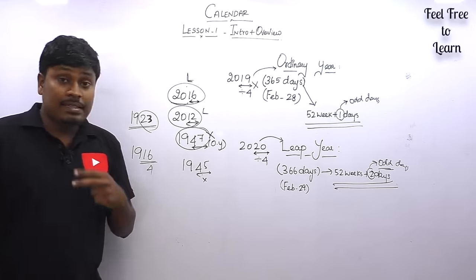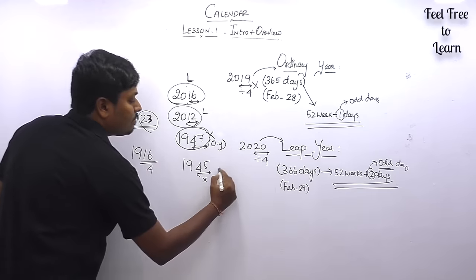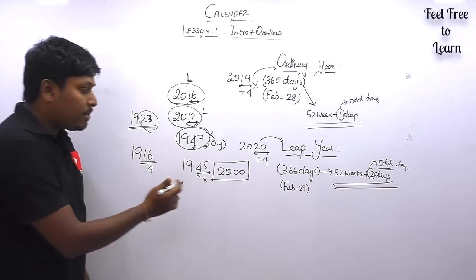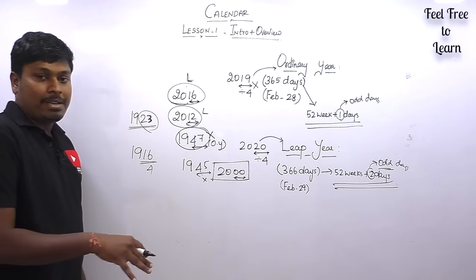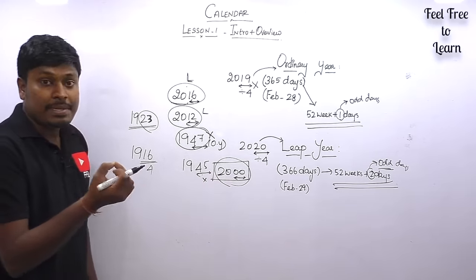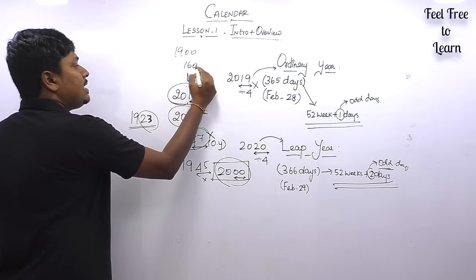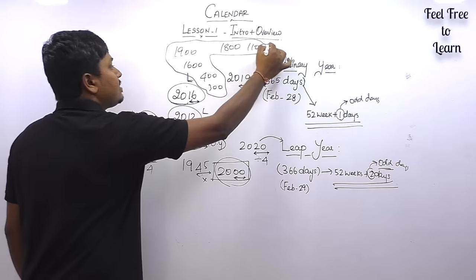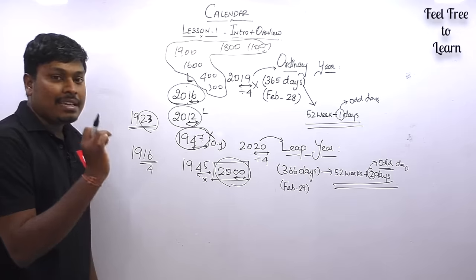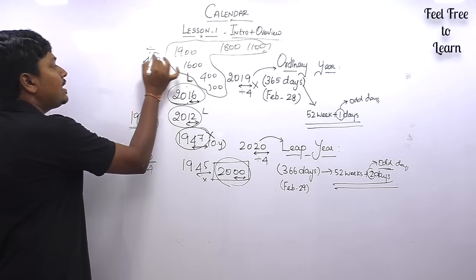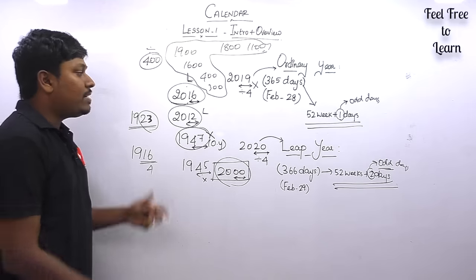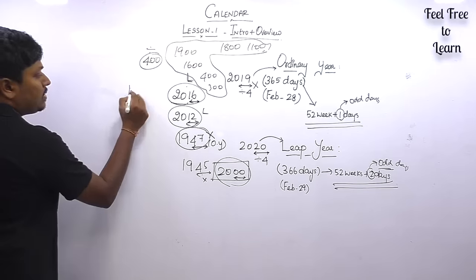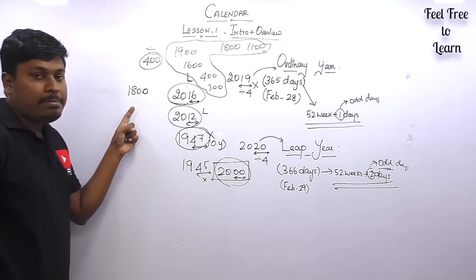There is an exceptional case for century years. For example, consider the year 2000 — we usually divide the last two digits by 4, but remember: if the last two digits end with zero (e.g., 1900, 1600, 400, 300, 1800, 1100), these are called century years. If it is a century year, divide it by 400. If divisible by 400 it is a leap year; if not, it is not a leap year.